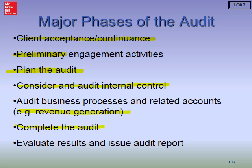Completion of the audit happens at the end with additional procedures — for example, getting a letter from the client's attorney, requiring direct communication between the auditor and the client's attorney to determine if there are litigation claims or contingent losses that need to be disclosed or booked. We also get a management representation letter at the end of the audit — a letter from management swearing they've given us complete information and told us about fraud. After these administrative steps, we evaluate all results and issue our audit report.